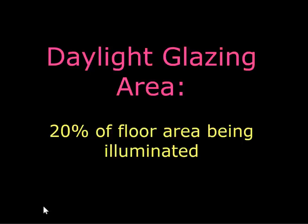If you use a lower-transmissive glazing you want to increase this area to compensate. That's sometimes a good decision from a visual comfort point of view because the glazing is less luminous and will tend to cause less visual discomfort. The downside is that glazing systems tend to cost more than opaque insulated wall and have higher thermal transmittance, so from a thermal point of view it's less desirable. As a starting point for design, a good approximate number is 20% of the floor area being illuminated.